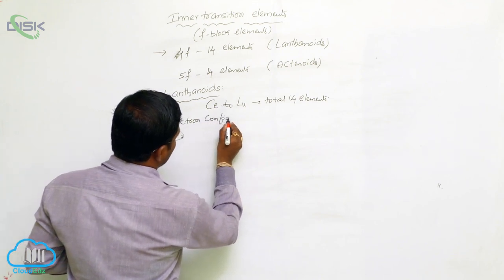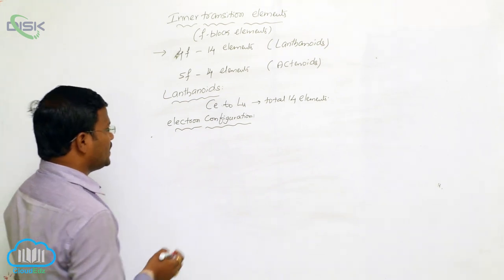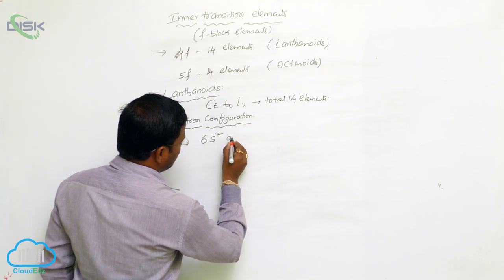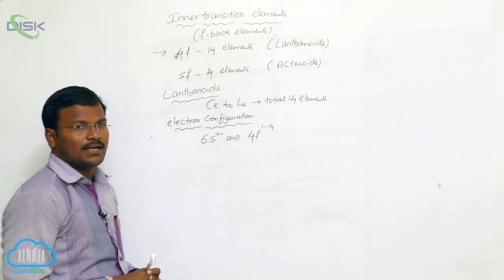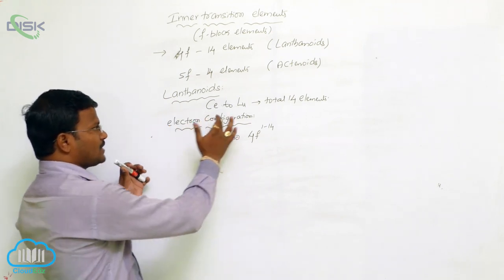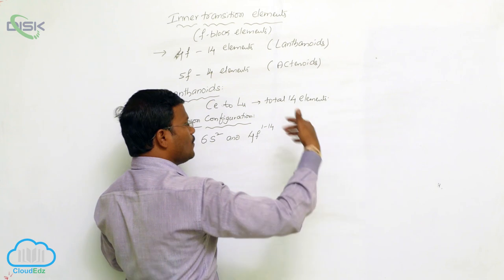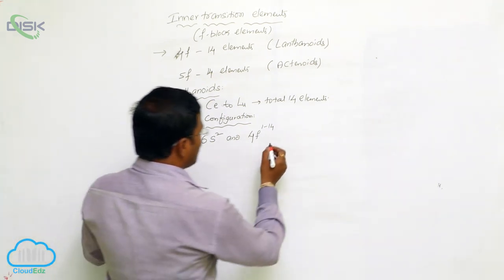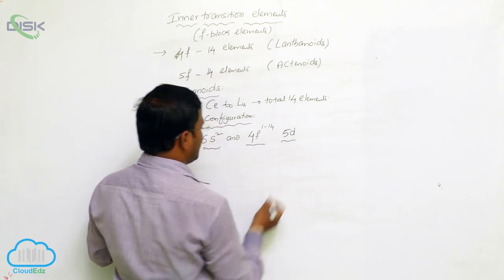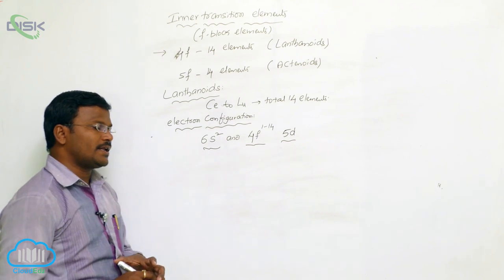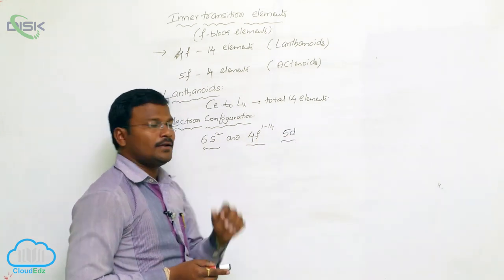The general electron configuration exhibited by lanthanides is [Xe] 6s² 4f¹⁻¹⁴, meaning the f orbital begins with 4f¹ in the first element and ends with 4f¹⁴ in the last element, from cerium to lutetium. Sometimes 5d orbitals are also introduced, so the generalized electron configuration can be written as 6s² 4f¹⁻¹⁴ 5d⁰⁻¹.